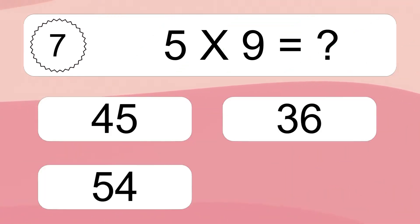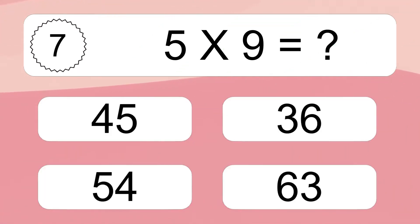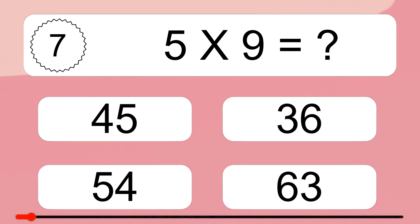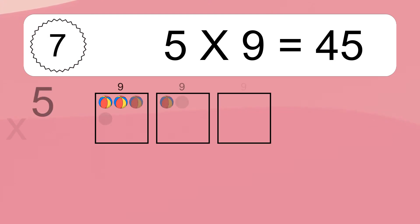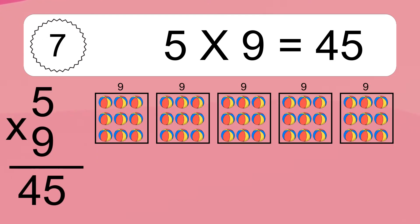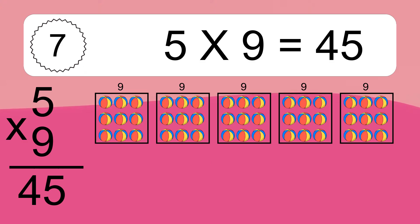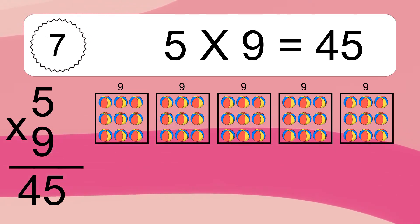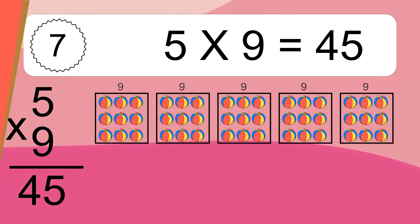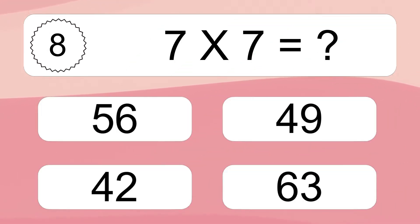5 times 9 equals what? 5 times 9 equals 45. We have 5 boxes and each box has 9 colorful balls inside. If you count all the balls in all the boxes together, you will have 5 times 9 balls. This equals 45 balls.